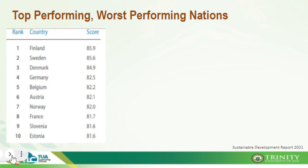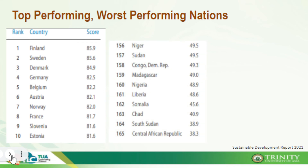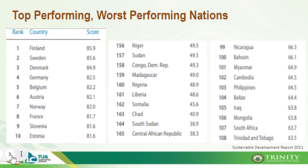The top country is Finland with a score of 85.9, followed by Sweden, Denmark, Germany, Belgium, and Austria — usually European countries perform well in their SDGs. The worst performing countries include the Central African Republic with a score of only 38.3, followed by South Sudan, Chad, Somalia, Liberia, and Nigeria — usually African countries. The Philippines is ranked 103 out of 165 countries with an average score of 64.5, tied with Cambodia.